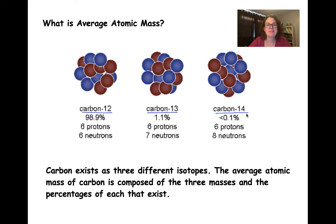So if we have a sample of 100 carbon atoms, 98 of them will be carbon-12, one of them will be carbon-13, and almost one of them will be carbon-14. So most of them will be carbon-12.